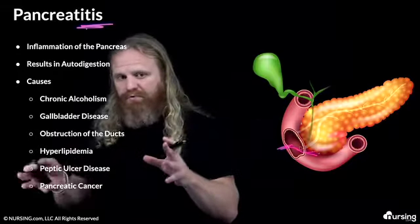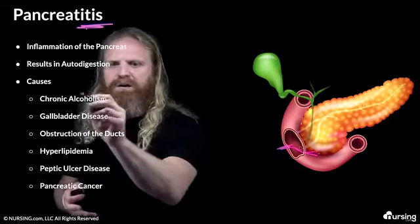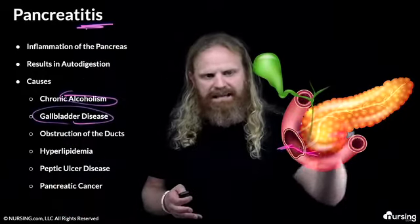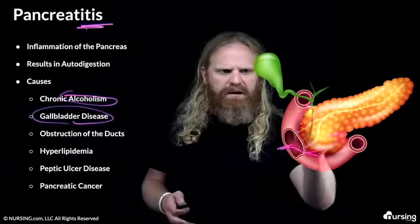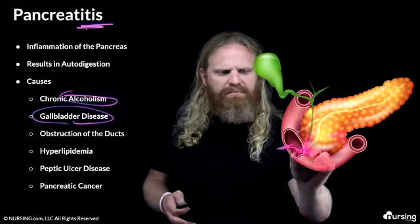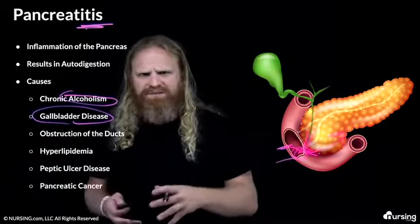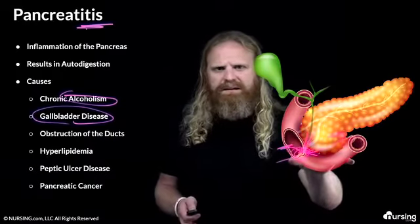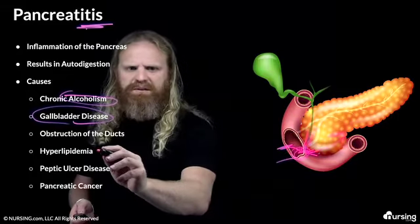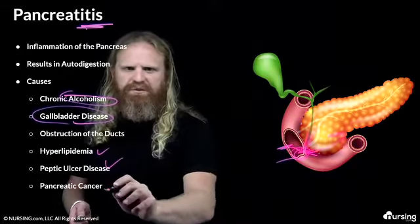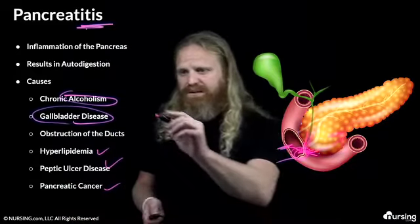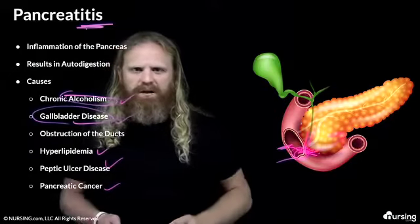The two most common causes are chronic alcoholism and gallbladder disease. You can see where this pancreatic duct connects with the bile duct right before it enters the duodenum. If there are gallstones, or inflammation in the bile ducts, it can obstruct the pancreatic duct as well. Patients might also have hyperlipidemia, peptic ulcer disease, or pancreatic cancer, but the ones to really remember are chronic alcoholism and gallbladder disease.